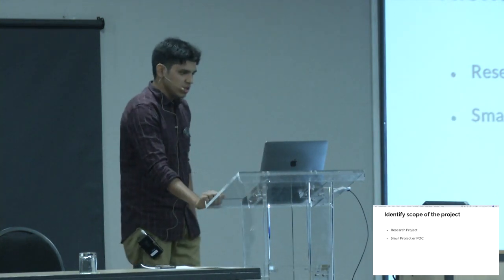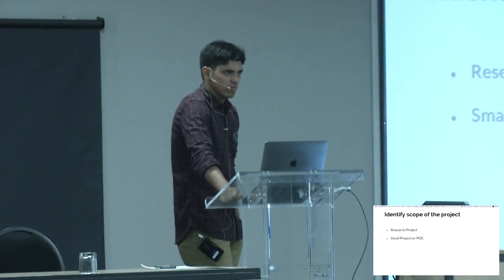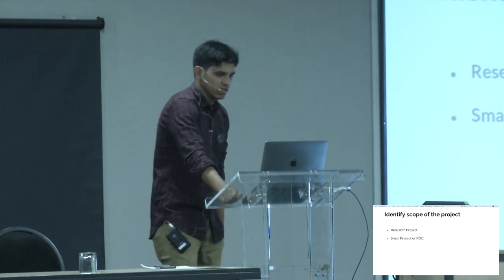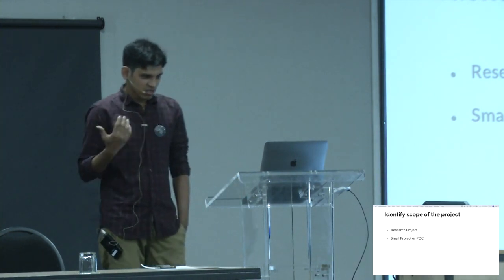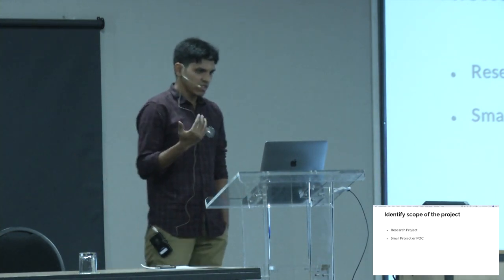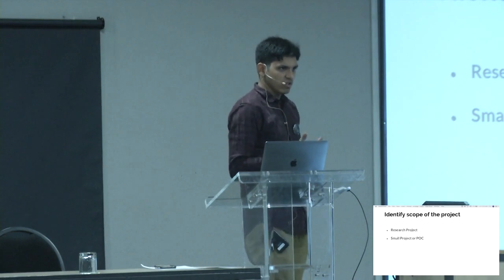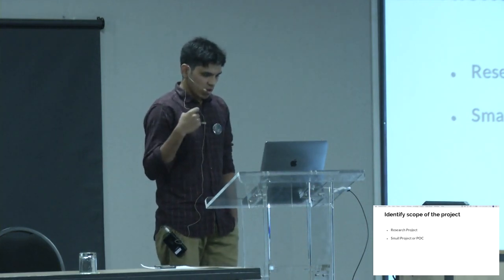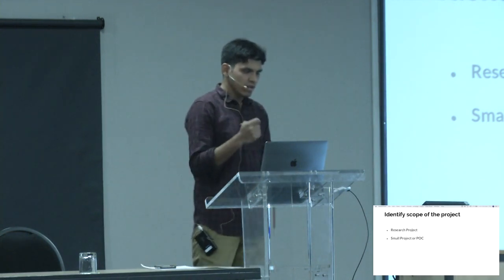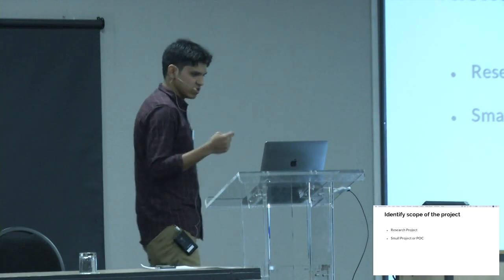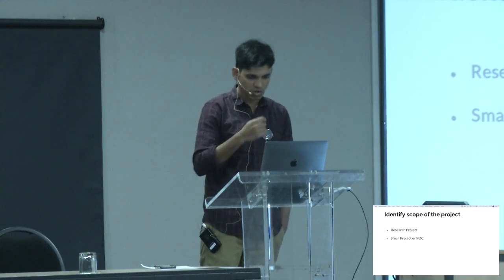For a small project or POC, you generally need to get things done in a quick session. You require high-level APIs rather than low-level ones, so you can use Keras or Gluon. A POC is never production-grade — you just want to demonstrate that something is possible. PyTorch is also a good option here because it is always simple to code and maintains readability throughout.